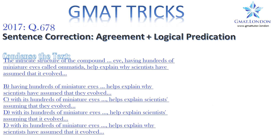In this question we have two topics: verb agreement and logical predication — that just means does the sentence actually make sense? Let's read the condensed version of the text: 'The intricate structure of the compound eye, having hundreds of miniature eyes called ommatidia, help explain why scientists have assumed that it evolved.'